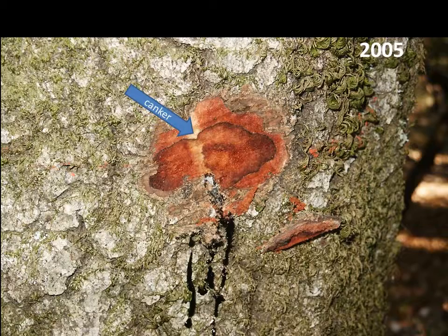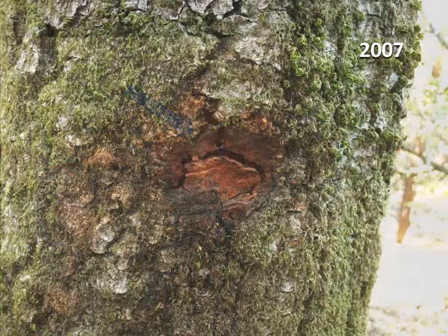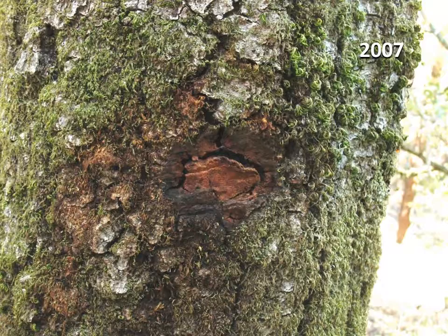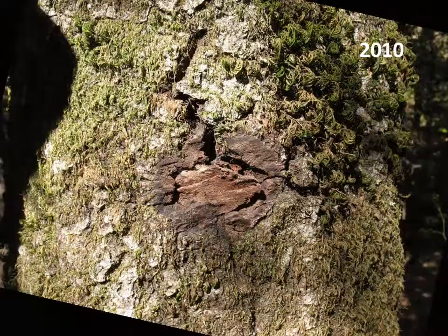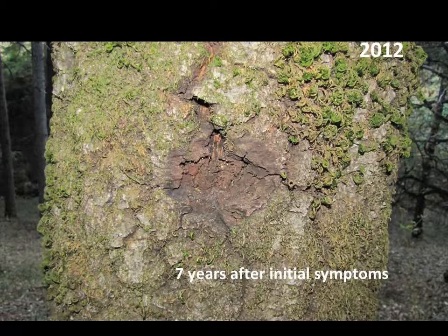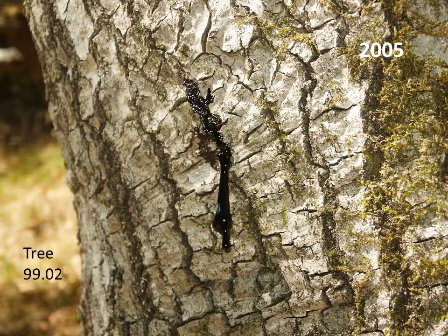No cankers were seen until we observed this bleeding canker in September 2005, after a very wet spring. Chipping off the outer bark near the bleeding revealed a small Phytophthora ramorum canker in the live bark, or phloem, tissue. By two years after the bleeding canker was first seen, it had become inactive, with no new bleeding. We continued to observe this canker over time, and it has remained inactive as the killed bark eroded away.